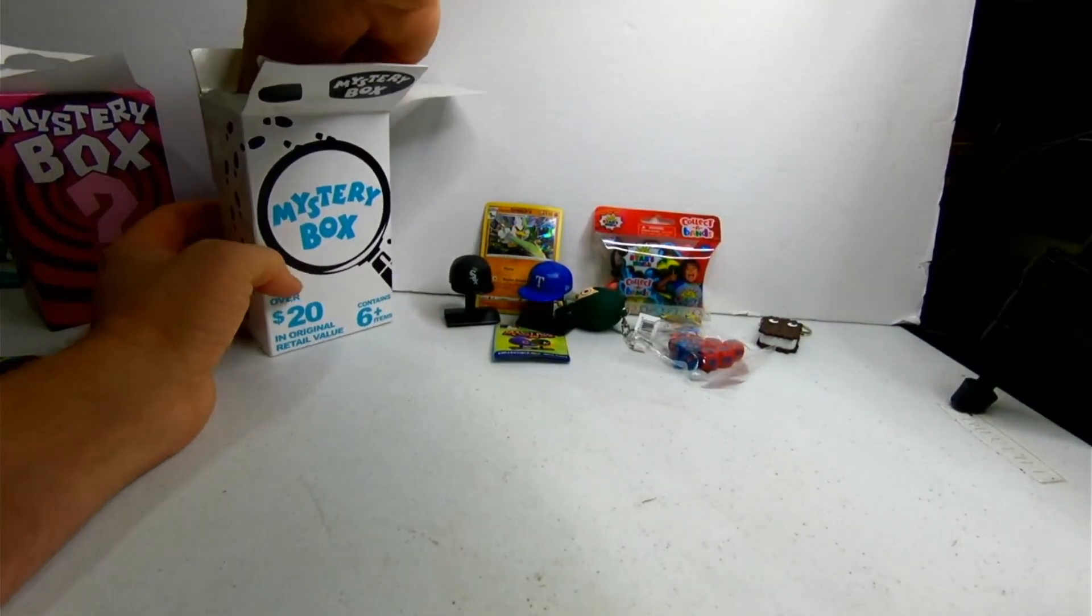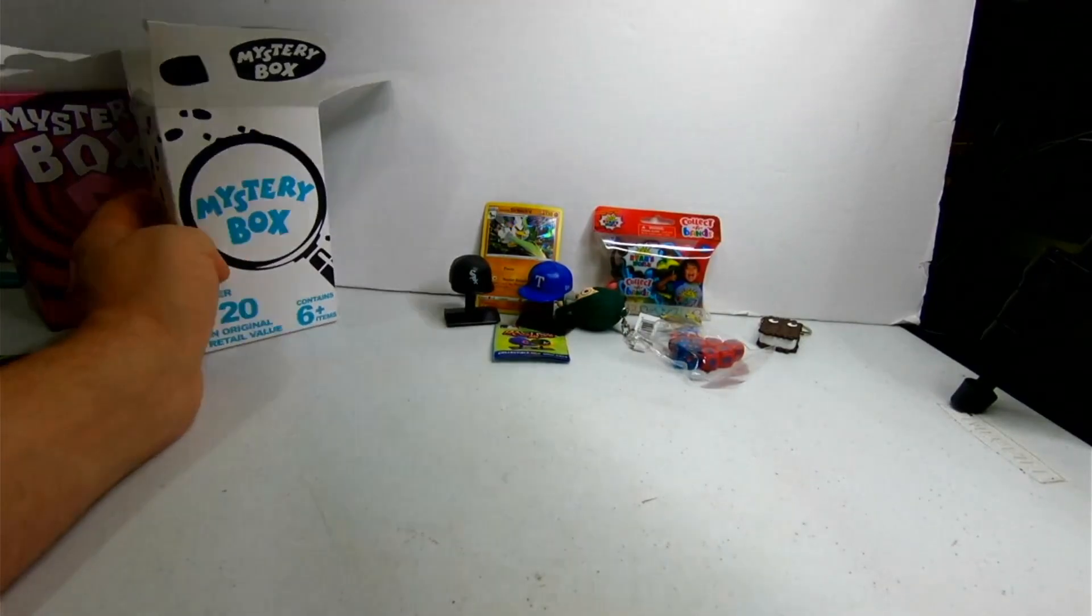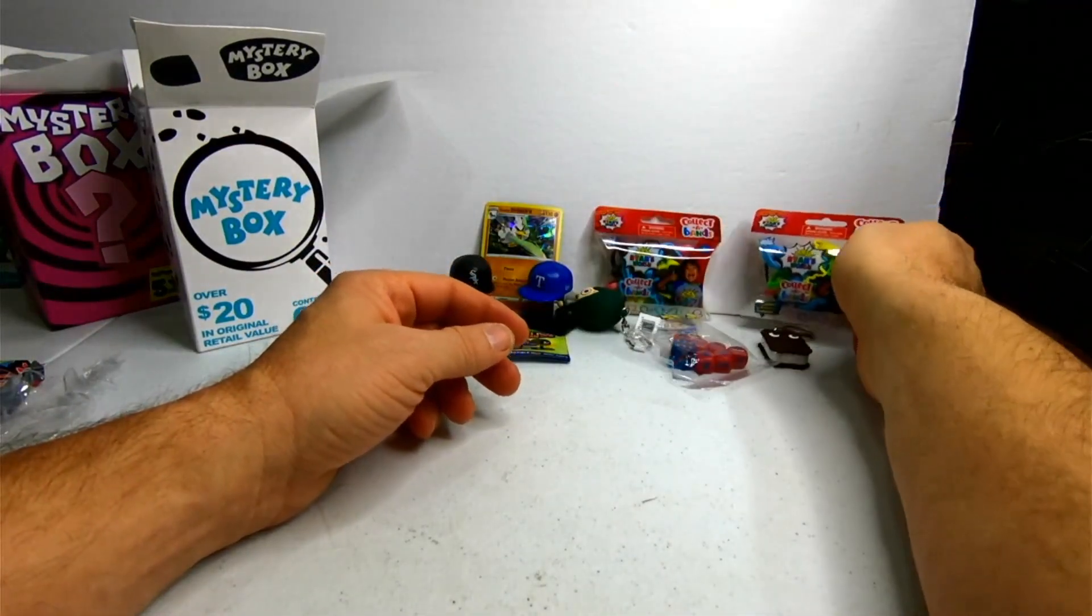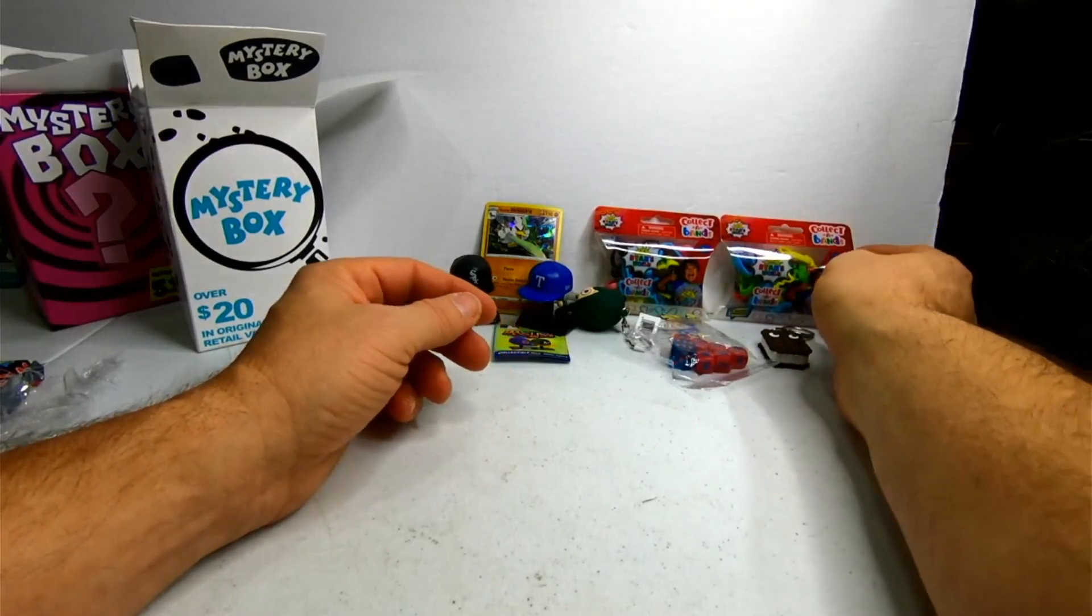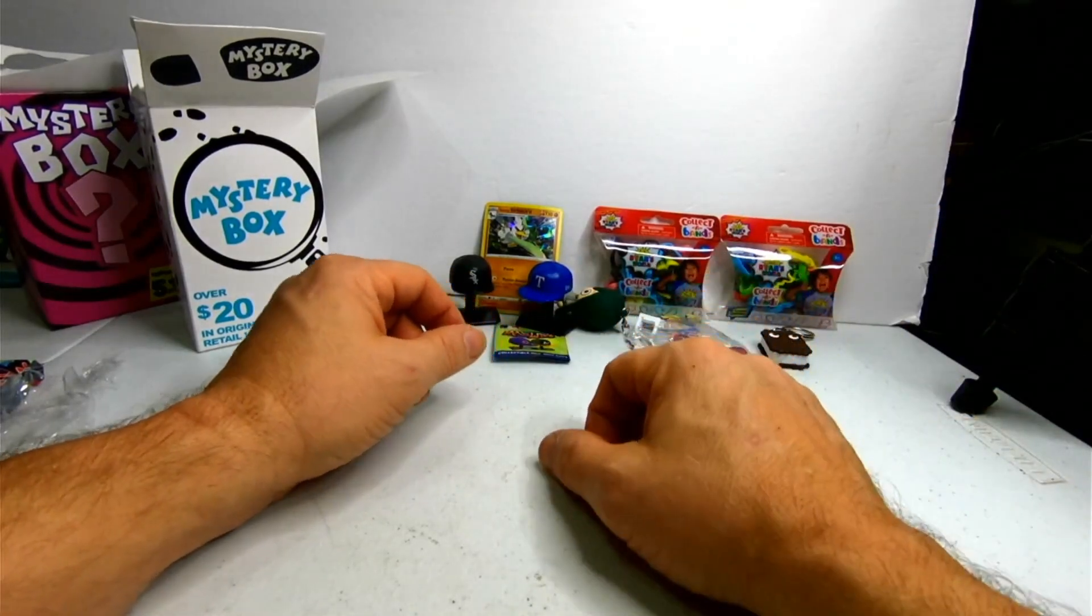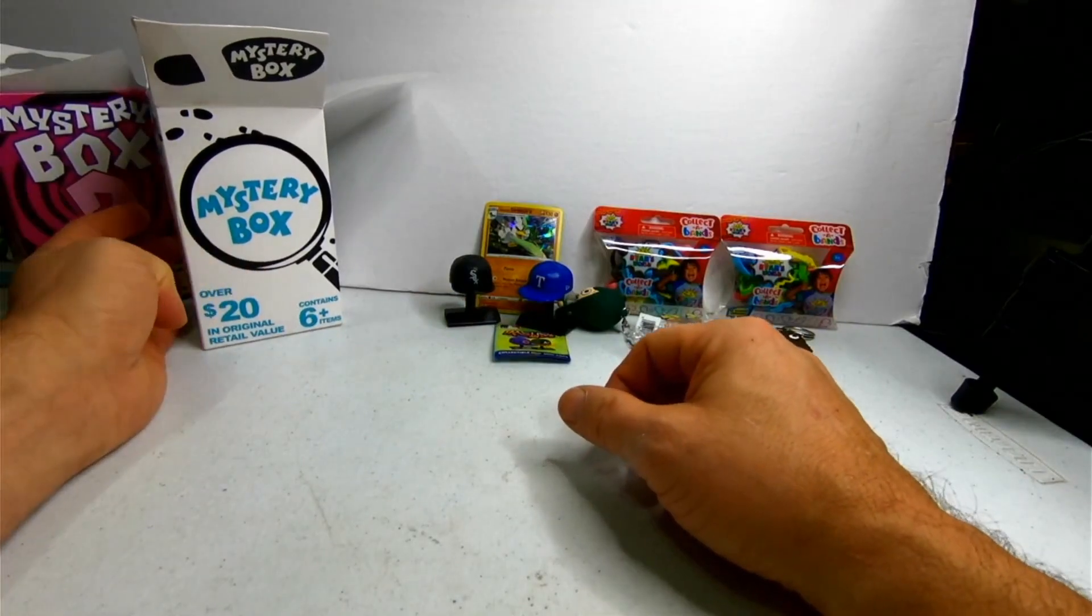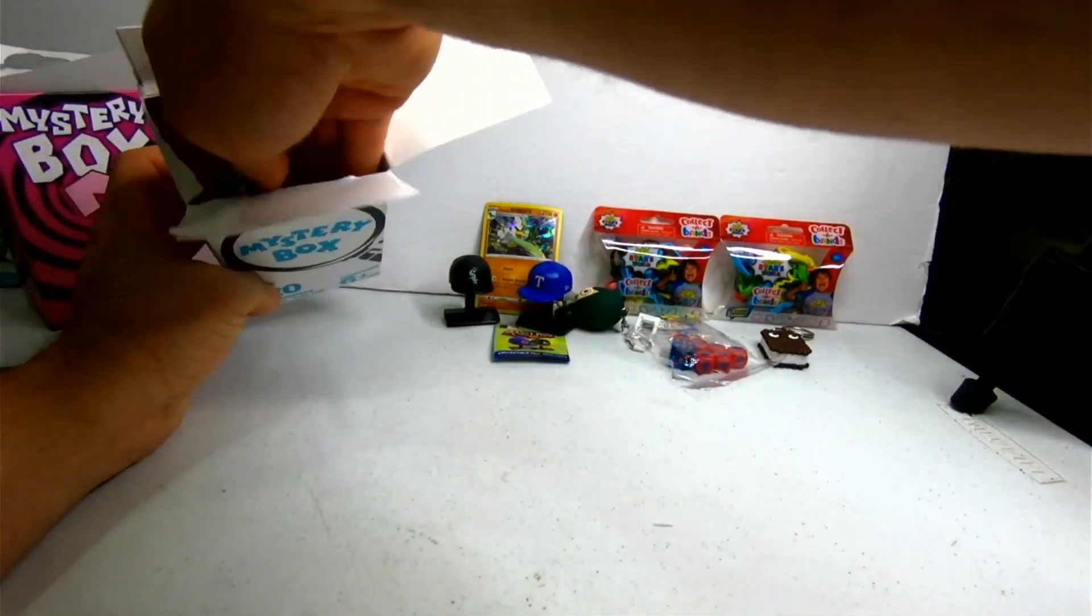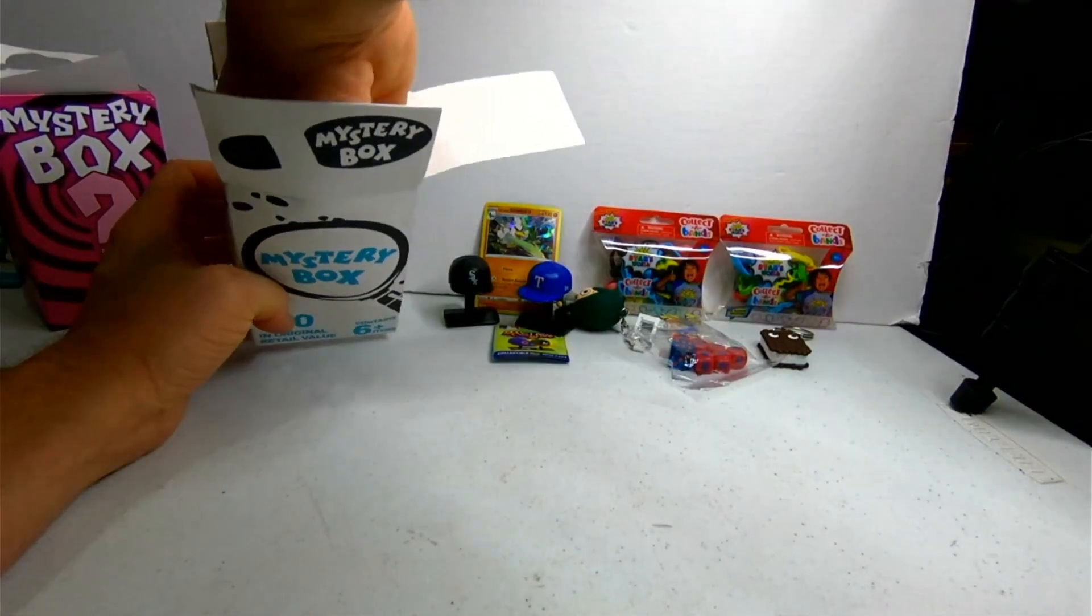Alright. Next item. So it said six. So we're at two now. This one's cool. Another set of collect-a-bands. So now we're up to four, five, six. Six dollars in value? Not twenty. I don't know what the original retail on these were.